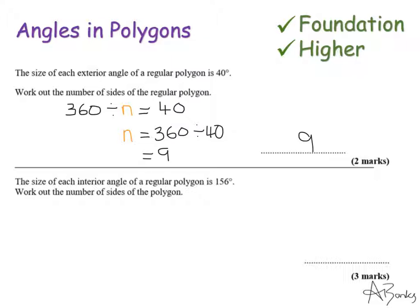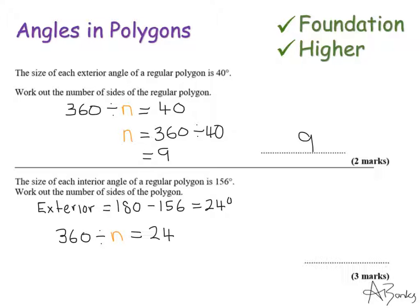The second example is slightly more complex: each interior angle is 156 degrees — work out the number of sides. It's easier to work with exterior angles, so first find the exterior angle: 180 − 156 = 24 degrees. Then use 360 ÷ n = 24, so n = 360 ÷ 24 = 15. The answer is a 15-sided shape.